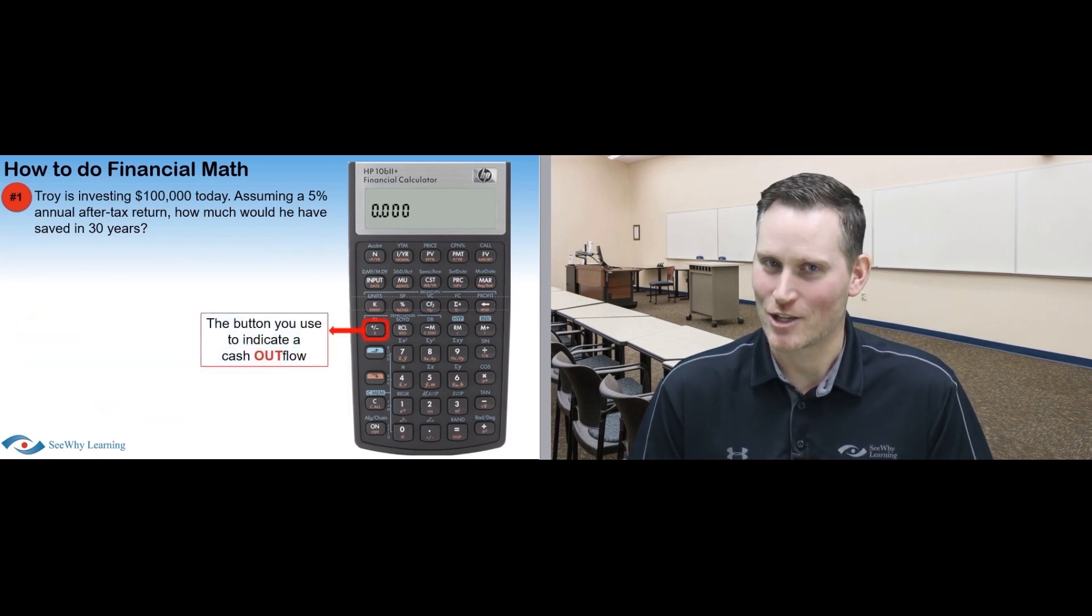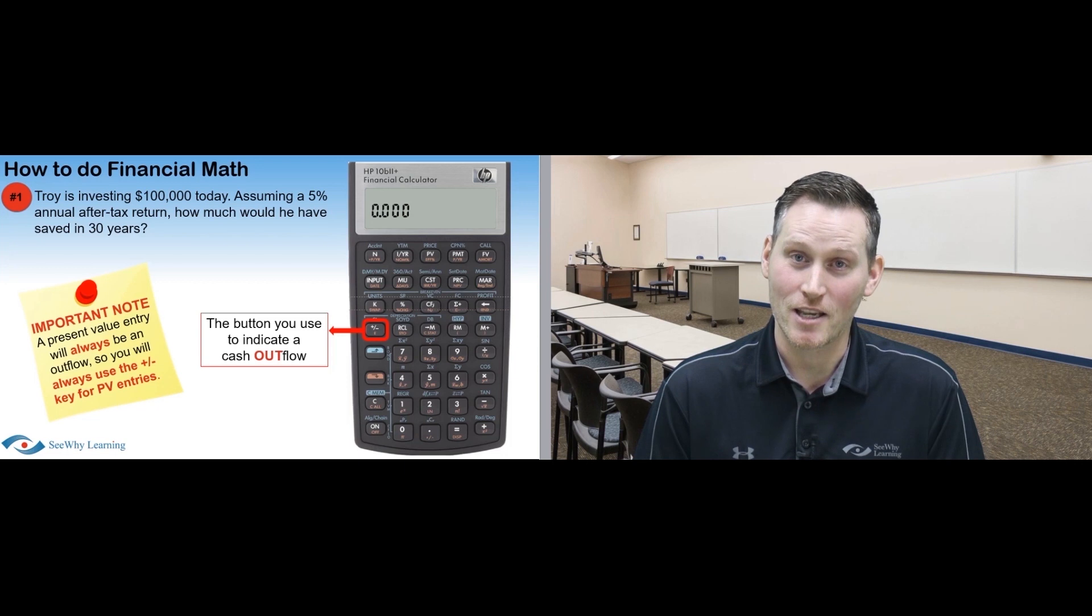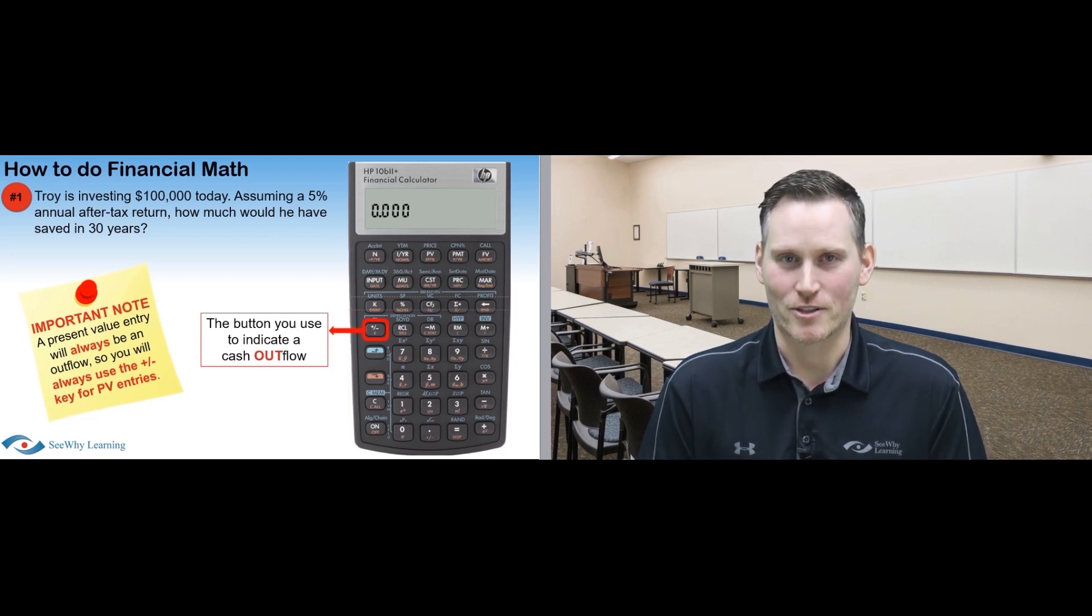So the button that we use to indicate a cash outflow is the plus-minus key. Now you don't need to use this button if it's a cash inflow. A present value entry will always be an outflow, so you'll always use the plus-minus key for any PV entries. Pretty easy, right? Okay, let's try another.